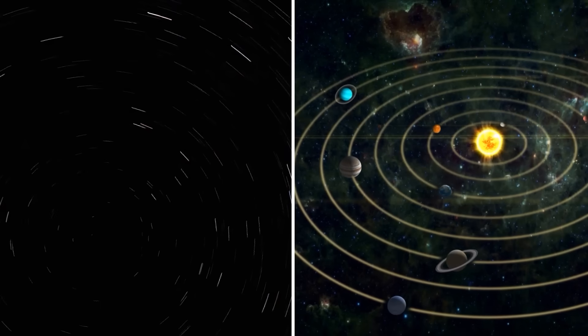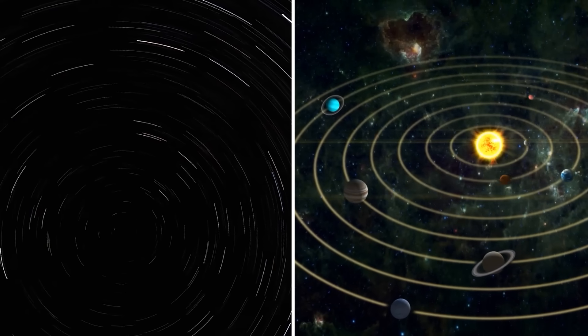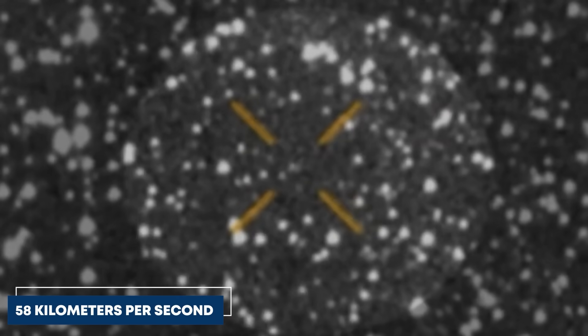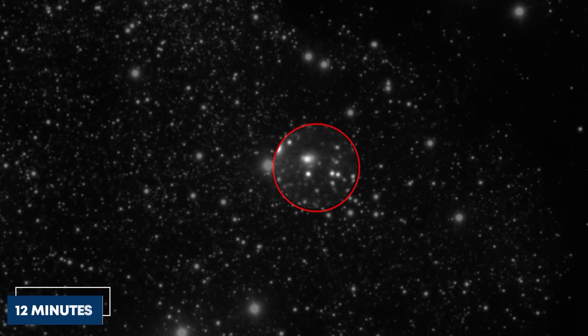Right now it's inside the orbit of Jupiter and is headed for its closest pass to the Sun at the end of October. This object was moving far too fast to belong to our solar system. Its speed? A staggering 58 kilometers per second, fast enough to circle Earth in just 12 minutes.